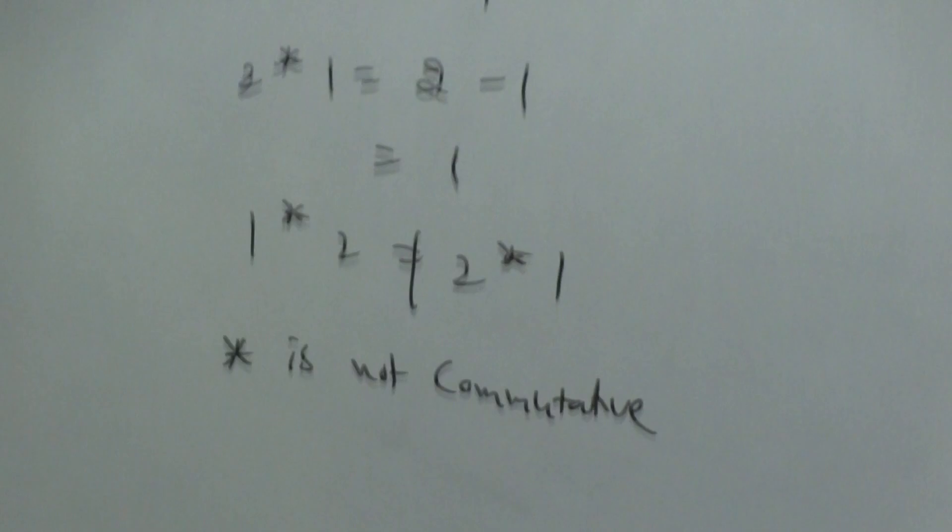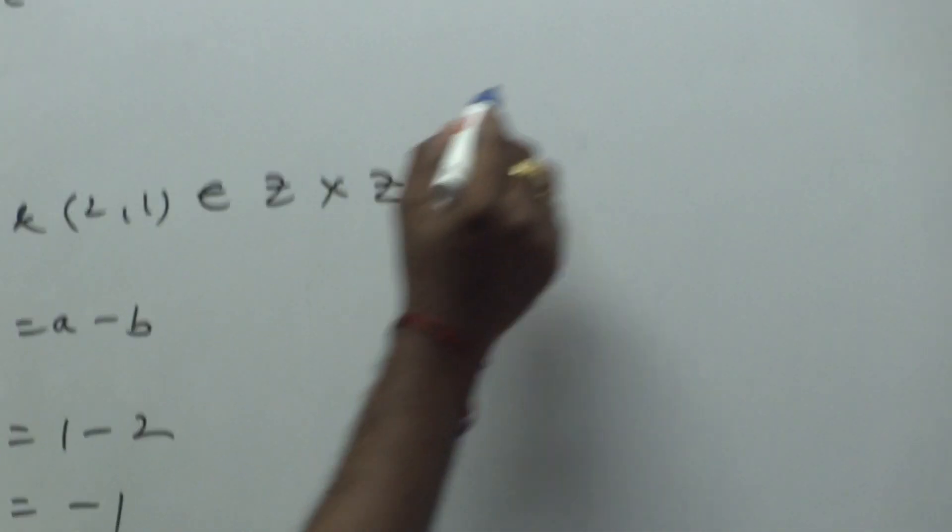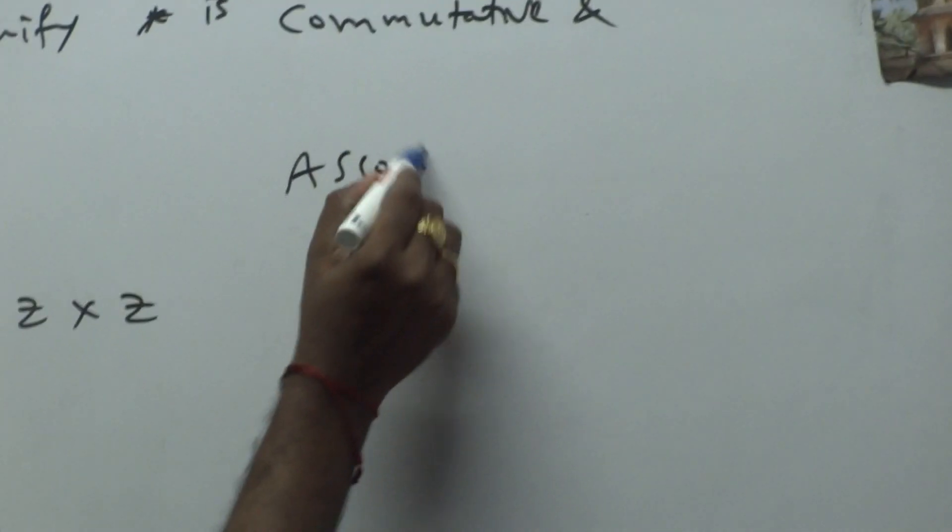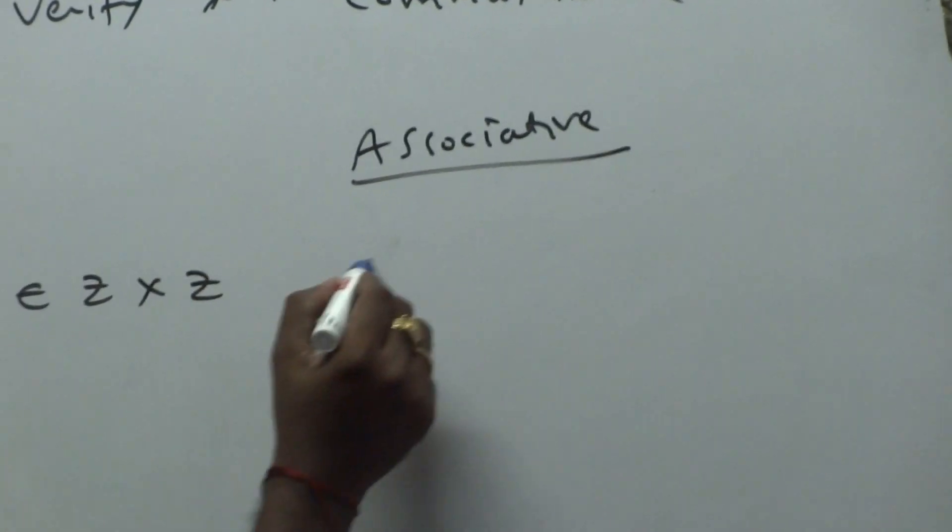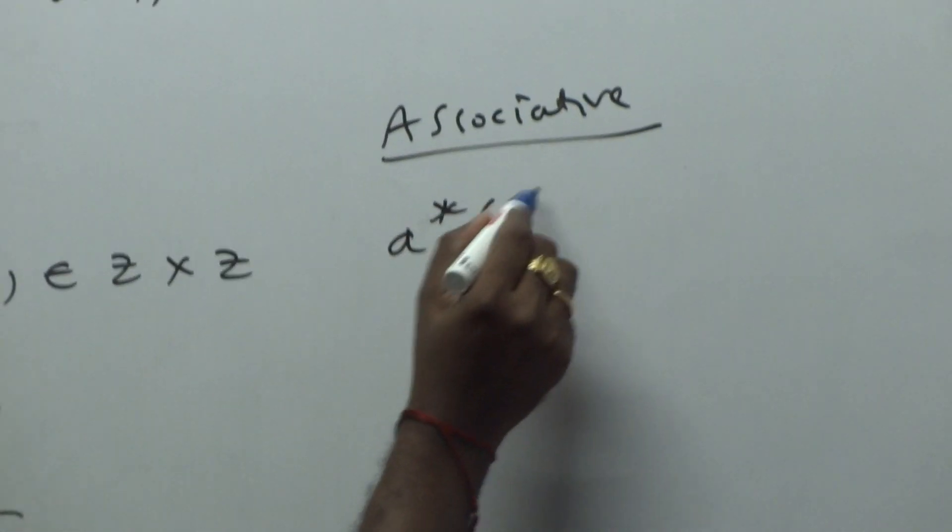Next we can prove associative. This is very important, associative. In associative, what is LHS? A star B star C.